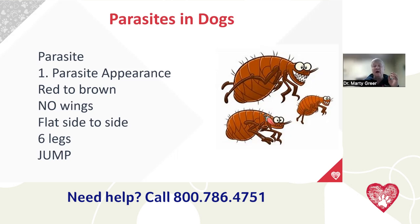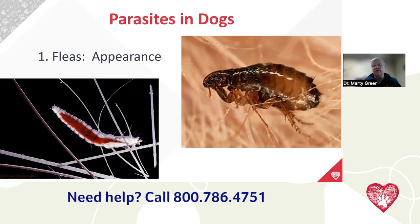Fleas are reddish brown in color and move really quickly. The easiest place to see them is usually on the unhaired part of the belly, where the dog or cat doesn't have as much hair. Sometimes on cats, right up by their ears. The adult flea is reddish brown with six legs and is flat. When fleas go through their life cycle, they lay an egg, which turns into a pupa, which turns into a nymph, which turns into an adult flea, and then the whole cycle starts over again.